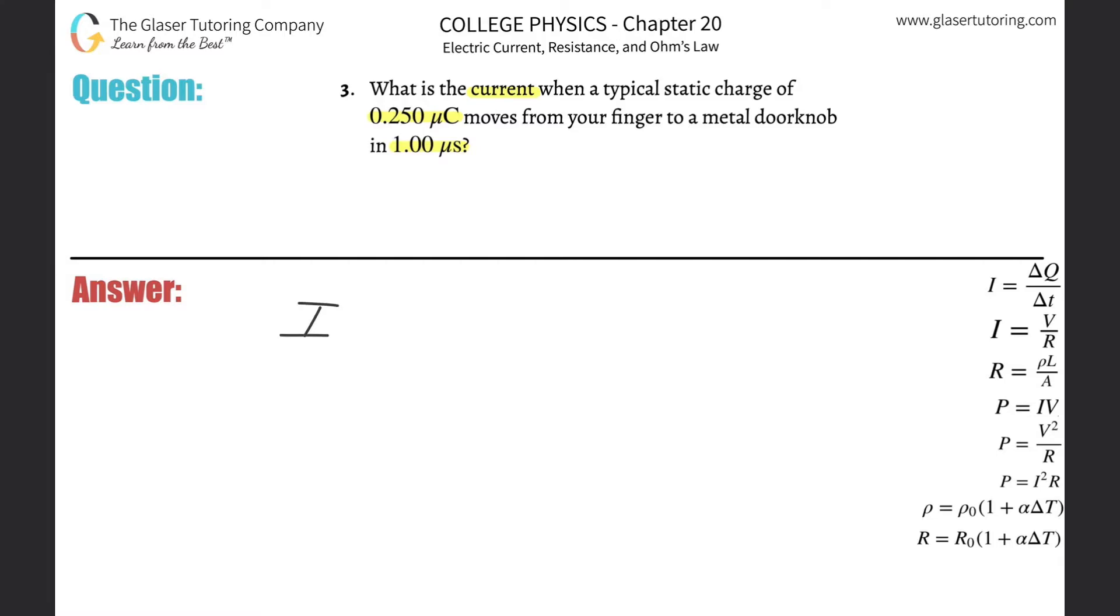All right, so take a look at number one, I went through current in detail. Current is simply going to be the change in charge or the charge passing through a particular point divided by the time over which it took for that charge to pass that point.